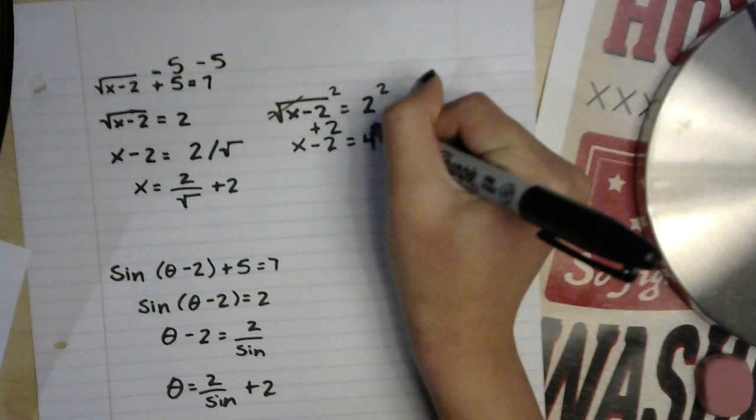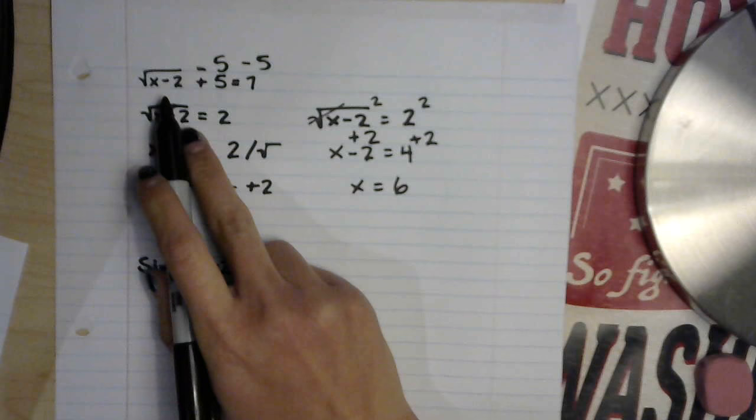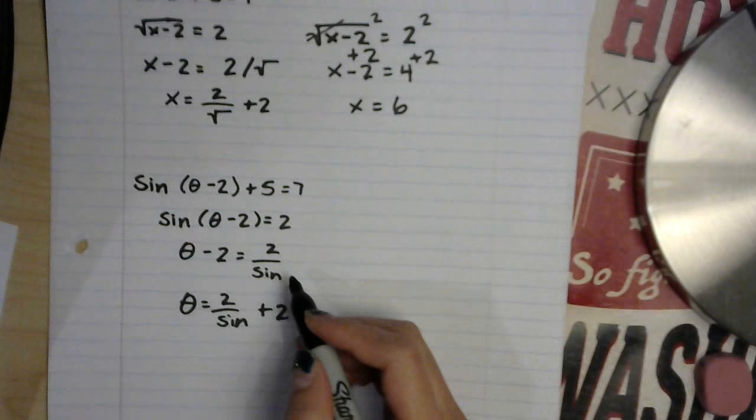And we add 2 to both sides. We get 6, and if you plug 6 in for this original x it will equal 7. We get the second one.